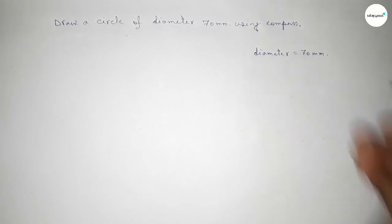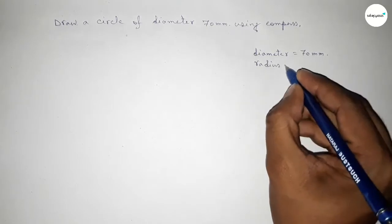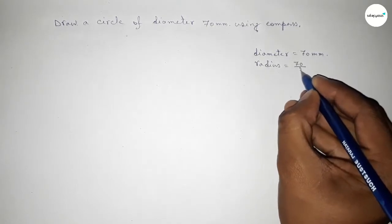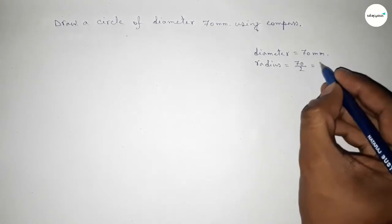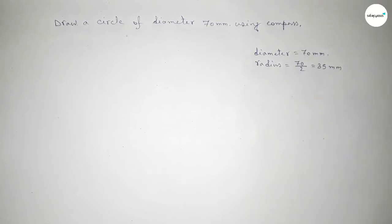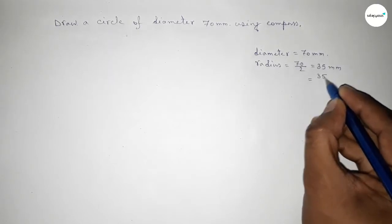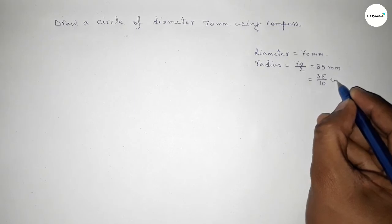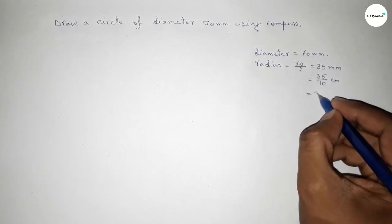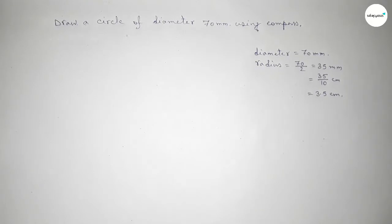Now finding the radius, so radius equal to dividing by 2, so this is 35 millimeter. Next, converting millimeter to centimeters, so dividing by 10, so this is 3.5 centimeter.